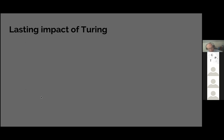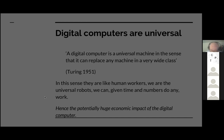So what's the lasting impact of this? Well, obviously, the first is this idea of the universal digital computer, the universal machine. He says a digital computer is a universal machine in the sense it can replace any machine in a very wide class. And in this sense digital computers are like human workers. We are, in Čapek's terms, universal robots. We can, given time and numbers, do any work. Universal robots obviously just meant in Czech universal workers. Čapek's play, Rossum's universal robots was playing in London around the time Turing wrote his paper. This universality explains the potentially huge economic impact of the digital computer and how it has transformed the world economy since he came up with the idea.